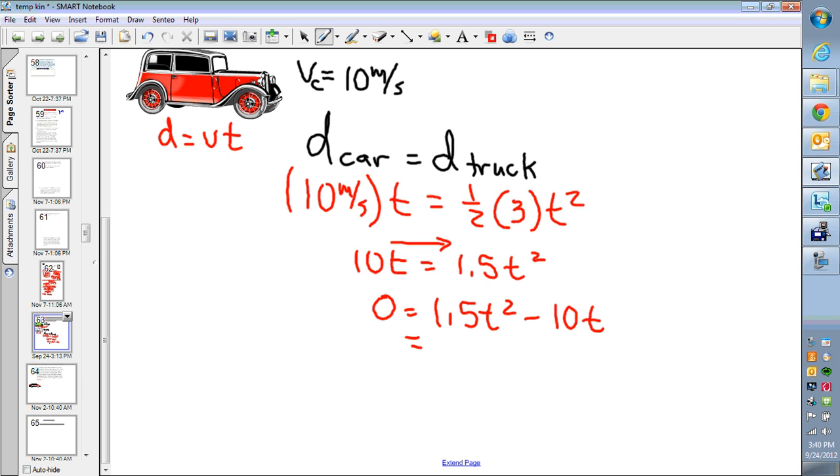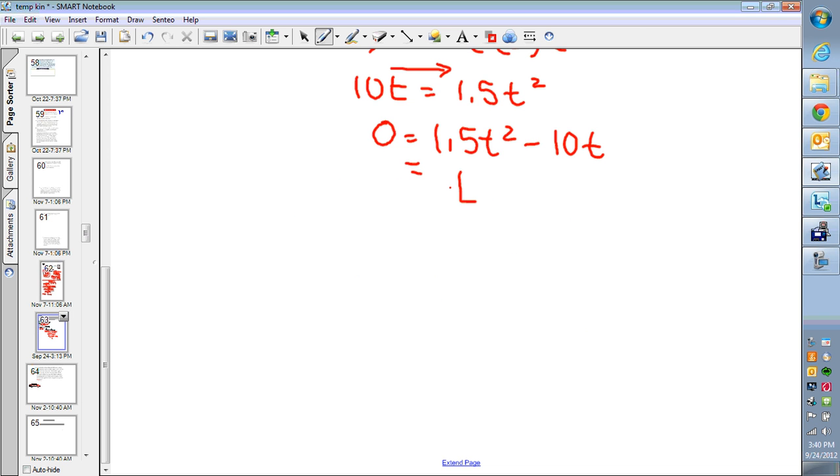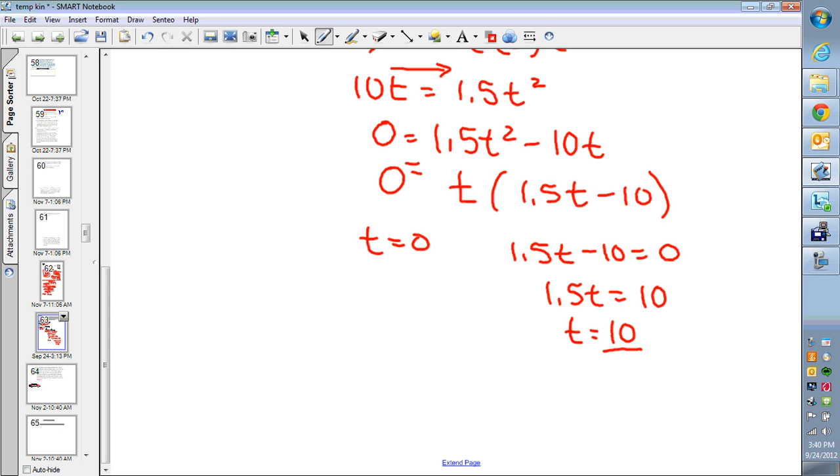Common factor. If you don't see a common factor here, then just take the T out, and you get 1.5T minus 10. So you have two things that multiply to get zero. The T must be zero, or the 1.5T minus 10 must be zero. Solving this one, take 10 over here. So T is 10 over 1.5. That's 20 over 3, which gives us 6.6 repeating, so we'll round it off to 7.